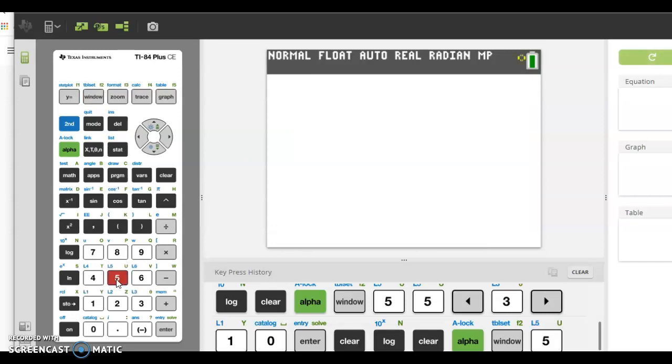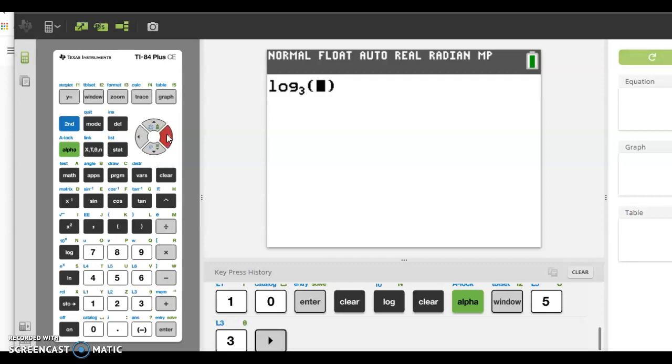So if you click on option 5, it allows you to change the base. So I think I said the base was 3, so we can type in the base and then 10 and then press enter. And the calculator will actually do it for you.